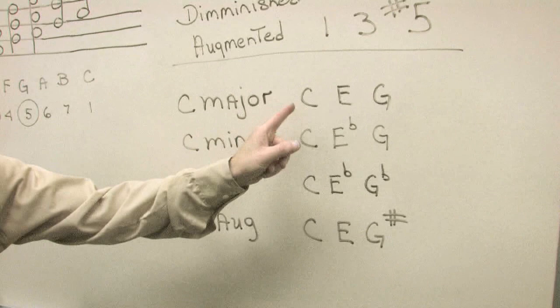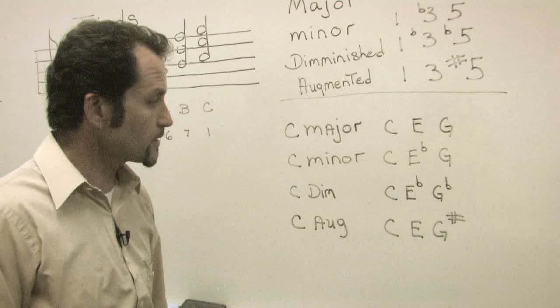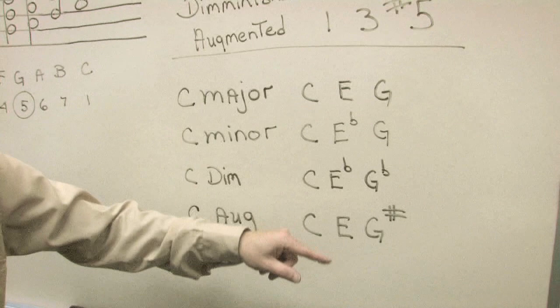To write out the notes in a C major triad, the notes will be C, E, G, as we just said before. To make this triad minor, what we would need to do is lower the third degree. So it will be C, E flat, G.